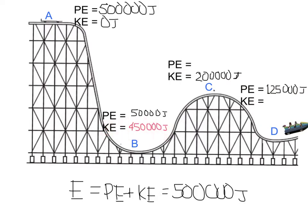If you said 450,000 joules for point B, you're correct, because kinetic and potential energy must always equal 500,000. So if I have 50,000 joules of PE, I must have 450,000 joules of kinetic energy for a total of 500,000. For point C, 300,000 joules of potential energy is correct, because 300,000 plus 200,000 equals 500,000 joules. And at point D, 375,000 joules of KE is correct, because adding that to 125,000 joules gives the total of 500,000 joules. Remember, the total amount of energy is constant throughout the entire ride.